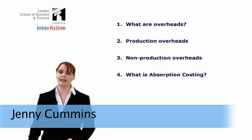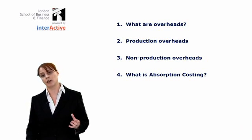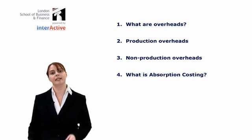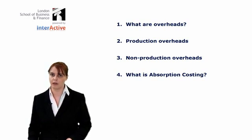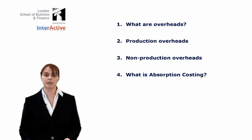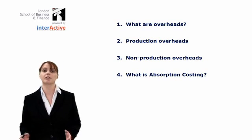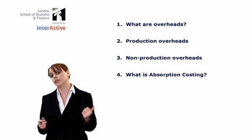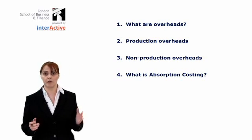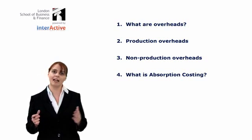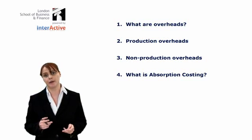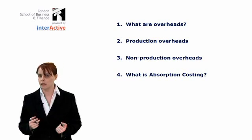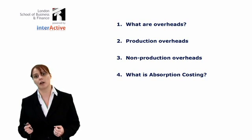In an earlier session, we looked at classifying a company's costs between direct costs and indirect costs. Direct costs are those costs that can be easily traced to the production of one unit of our output, whereas indirect costs are the costs which cannot be easily traced to the production of one unit of our output. So our indirect costs might be our head office administration costs or the power cost for our factory. The sum of our indirect costs is equal to our overhead costs.